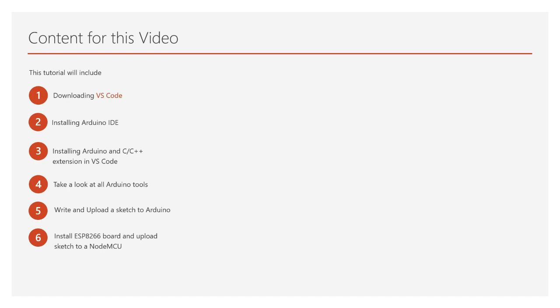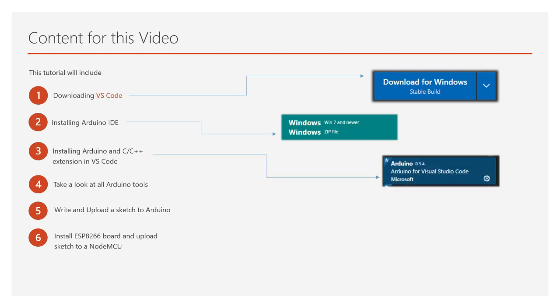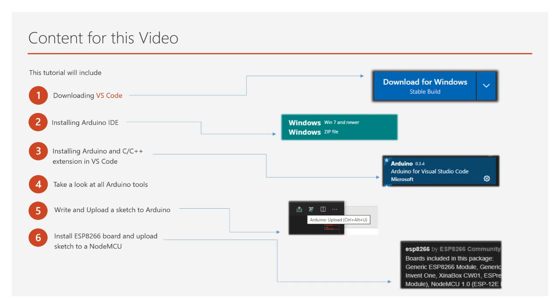We will try to upload code to an Arduino, then install ESP8266 boards using Board Manager, and finally upload code to the ESP8266. This tutorial will include the following steps: downloading VS Code, installing the traditional Arduino IDE, installing the Arduino and C++ extensions in VS Code, exploring the Arduino tools in VS Code, writing and uploading a sketch to an Arduino UNO, and finally installing the ESP8266 board and uploading a sketch to a NodeMCU board.